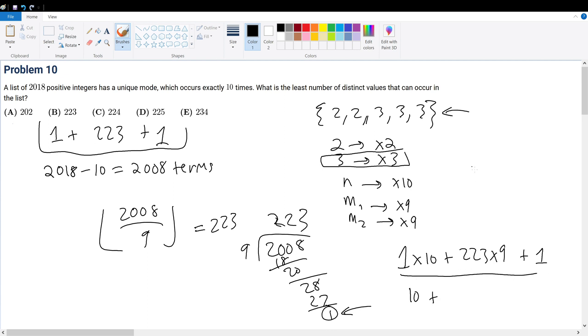That's 10 plus 223 times 9. 223 times 9 would just be 2,008 minus 1, which is 2,007 plus 1. Obviously, this gets 2,018.